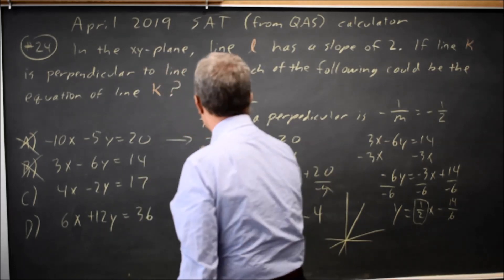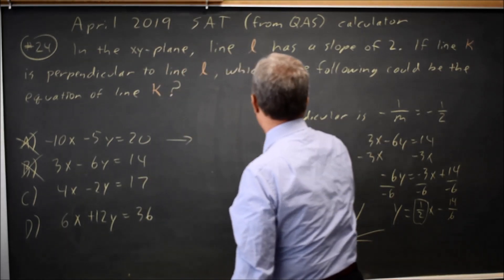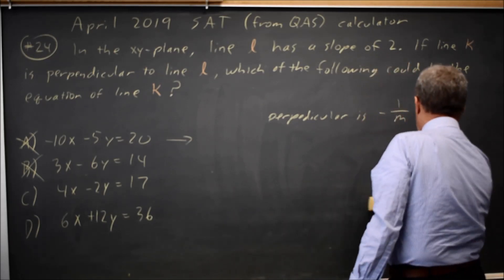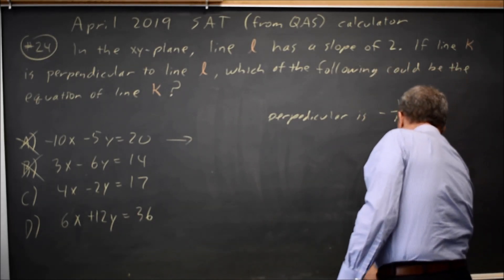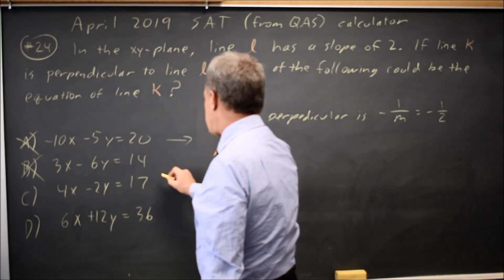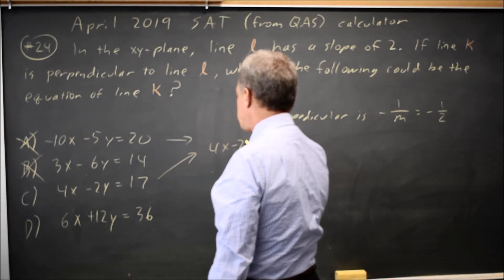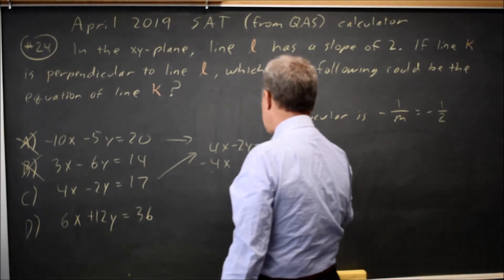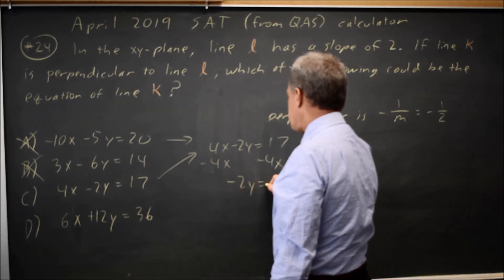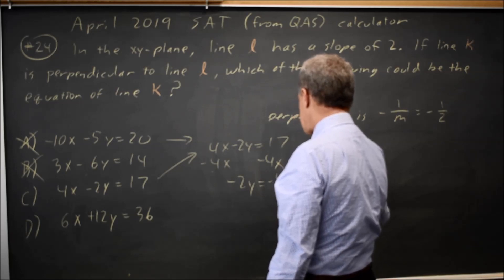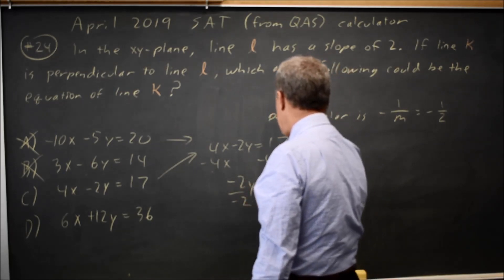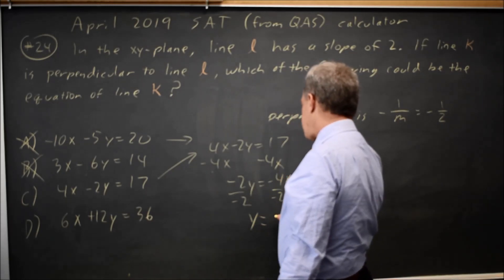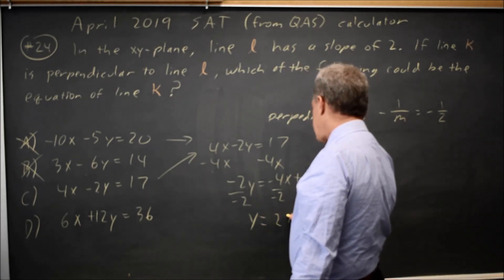What about choice C? Again, I'm looking for slope of negative 1 half. And I have 4x minus 2y equals 17. Subtract 4x from both sides, negative 2y equals negative 4x plus 17. Divide by negative 2, y equals positive 2x minus 17 over 2.